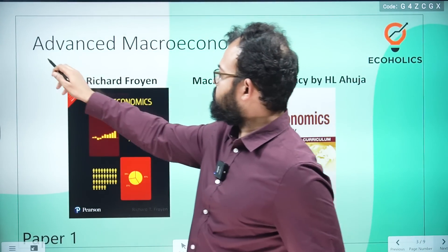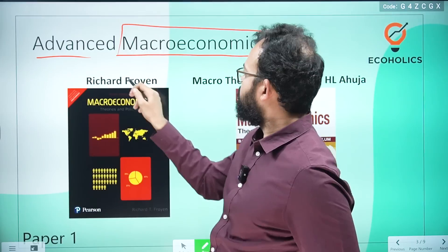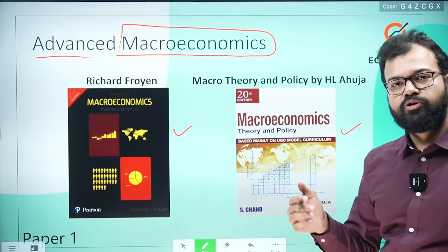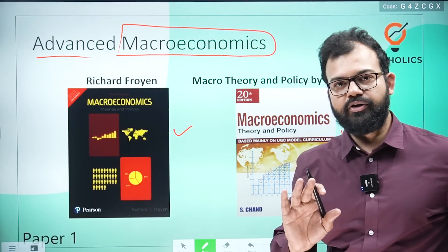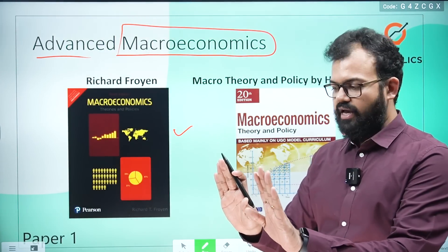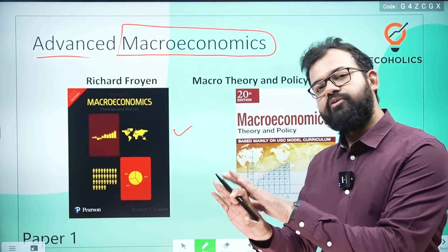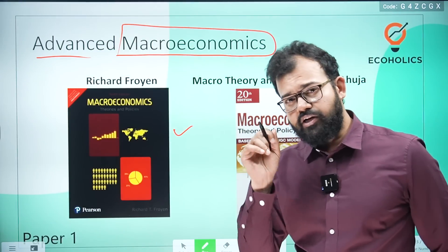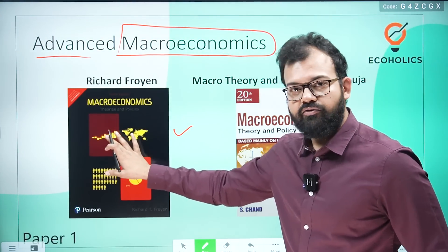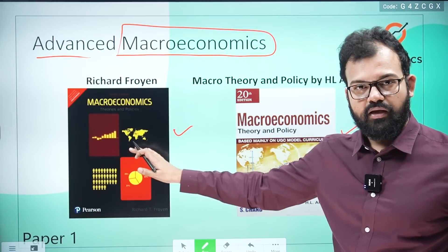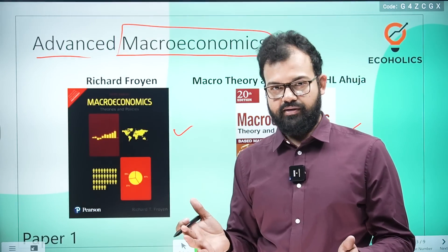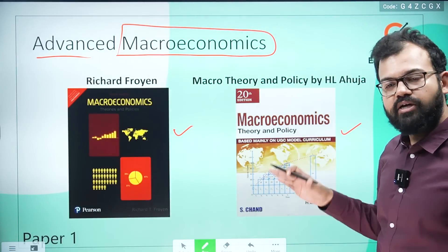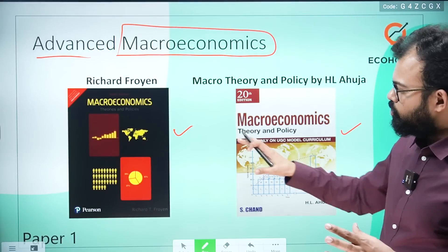For advanced macroeconomics, there are two important books. This is not a university exam where you read cover to cover — keep the syllabus and previous year question papers in mind and cover only those topics. If you have read classical theory from one book, do not repeat it in the other, because the concept remains the same even if the language differs. Some students find Froyen easier in terms of language and conceptual understanding, but both books are important.